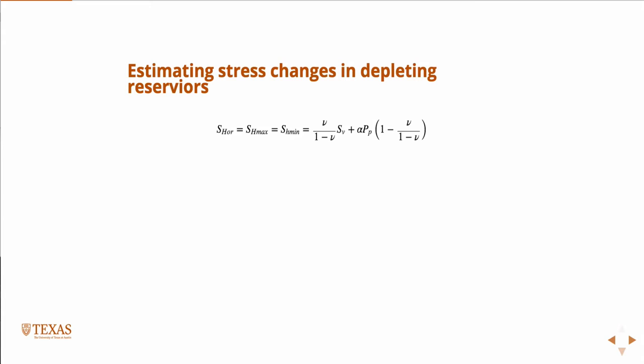This is one way to write it, and the reason it's written like this is because what we want to do is take the derivative of both sides with respect to the change in pore pressure. Writing it like that just makes it easy to see. If I take the derivative of both sides with respect to pore pressure, this term goes away, and then I just have this.